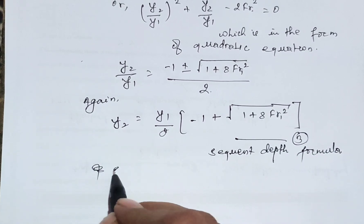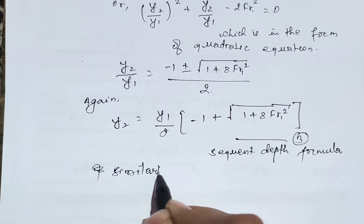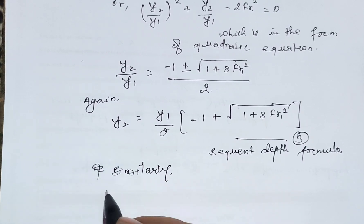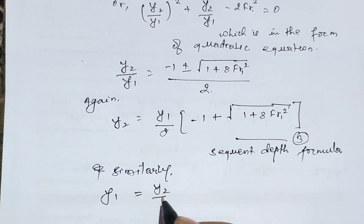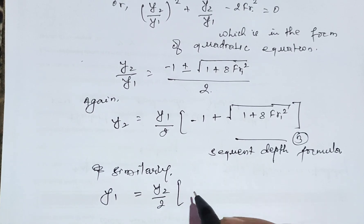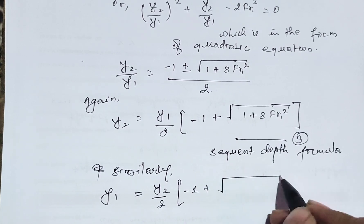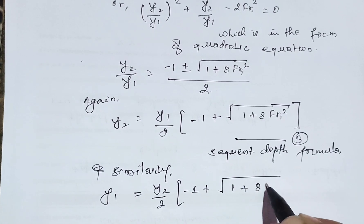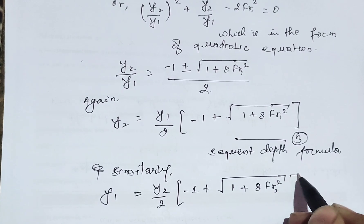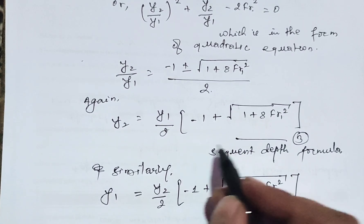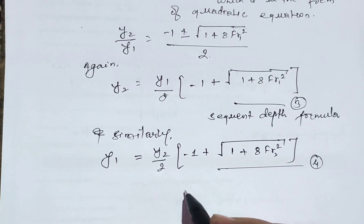Similarly, for y1: y1 equals y2 divided by 2 times (minus 1 plus square root of 1 plus 8·FR2²). This is equation 4 for the initial depth y1.